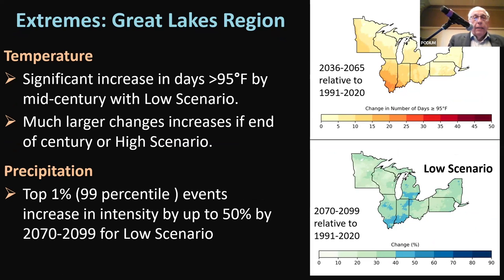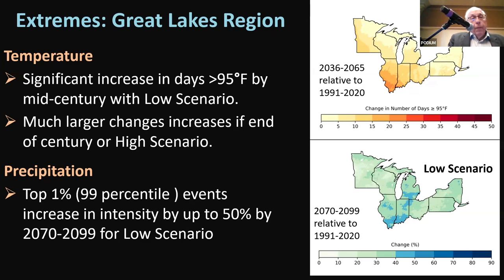Summers becoming drier is already kind of happening. More precipitation when it does rain or snow is likely to be a larger event than in the past, because of the additional energy in the atmosphere leading to more significant storms. Looking at days above 95 degrees Fahrenheit, we project an increase at mid-century and even more so by the end of the century. If we look at the top 1% of events, they increase by up to 50% by end of century for the low scenario, and even much more so for the high scenario.